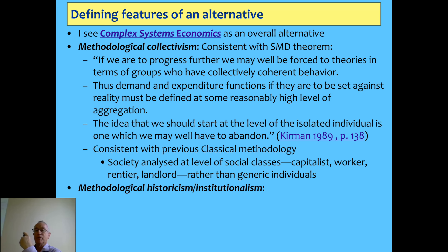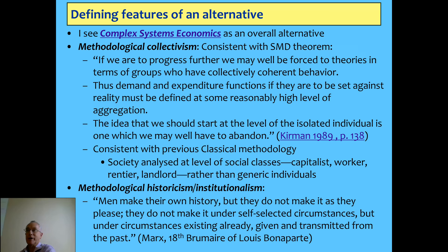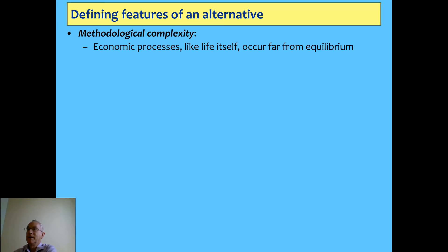Another element I've added to my preferred approach is that we have to have history and institutions in the way we think about the behavior of the economy. This is a quote from Marx in The Eighteenth Brumaire of Louis Napoleon Bonaparte: men make their own history, but not as they please. In other words, in addition to income constraints, there are also social, political, and historical constraints. The time at which you act affects how you can act — minimized by neoclassicals and by Austrians too. Fundamentally we have to see ourselves as being in history and going forward.